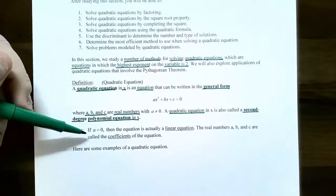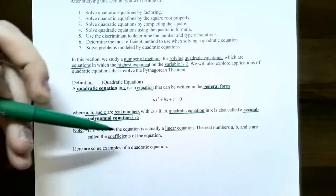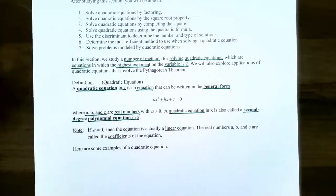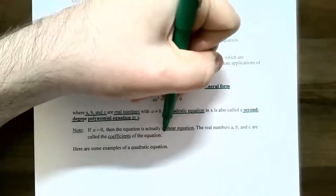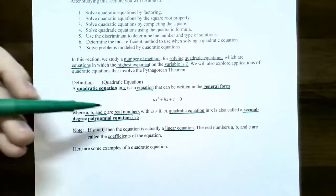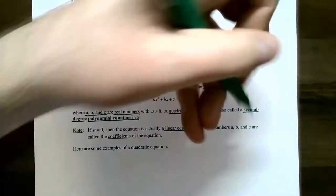If a is equal to zero, then you would have bx plus c equals zero, and that is what's called a linear equation — the highest power would be one on the x instead. The a, the b, and the c are sometimes called coefficients.